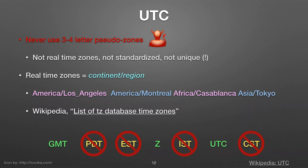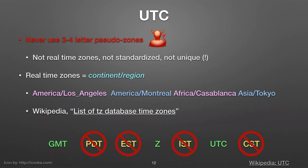Real time zones are named with a continent and a region with a slash — Europe/Paris, America/Montreal. Those are real time zones with recorded history of what changes were made over time in that area. PDT, EST etc. are not even unique — CST is Central Standard Time in the US but also China Standard Time. IST is India Standard Time and Irish Standard Time. They're not standardized. That is probably the most practical thing I'll tell you today: don't use those abbreviations.